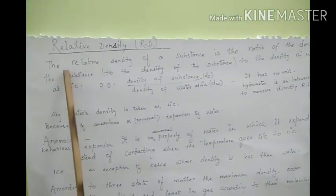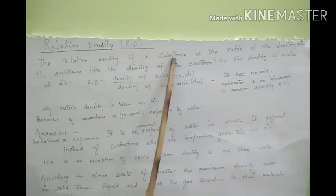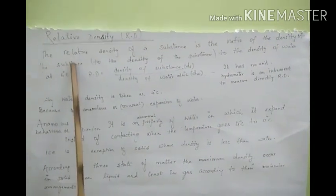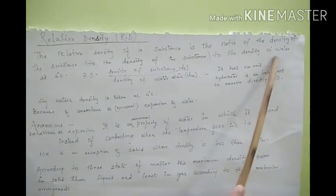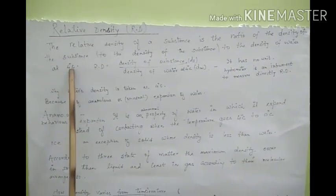What is relative density? The relative density of a substance is the ratio of the density of the substance to the density of water at 4 degrees.